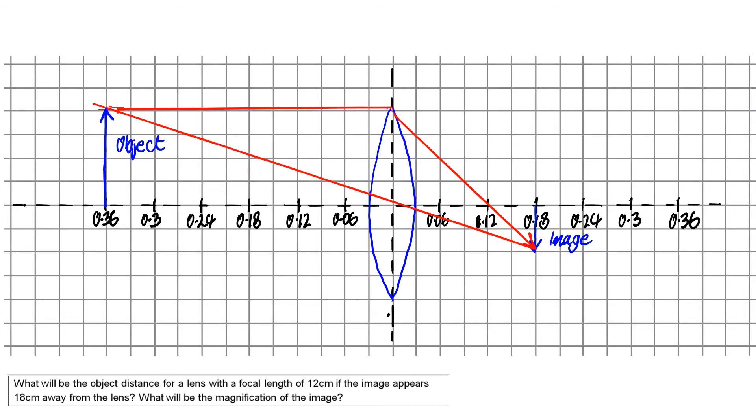So now I can draw an object on that side to represent my object. And we can see that the object is at 36 centimetres away from the lens. So that's my object distance d0, 0.36 metres or 36 centimetres.